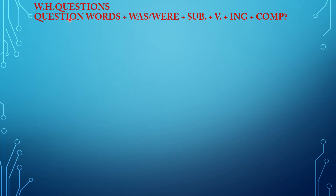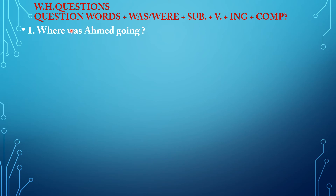The second type of question is the WH-questions. You should begin your question by putting one of the question words, followed by was or were, the subject, the verb with -ing, the complement, and the question mark. For example: Where was Ahmed going? Where is the question word; was; Ahmed is the subject; going — go with -ing. Second example: What were they doing?